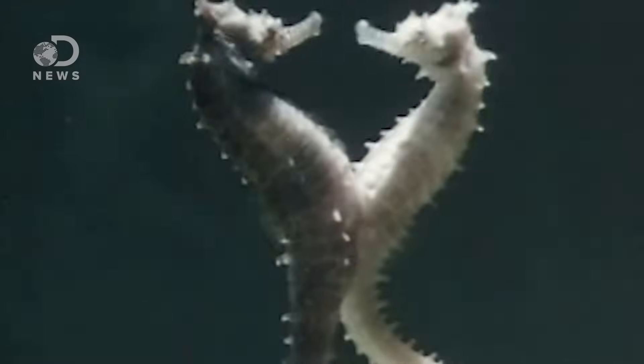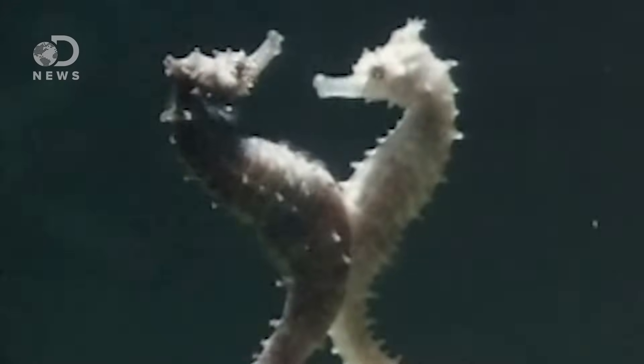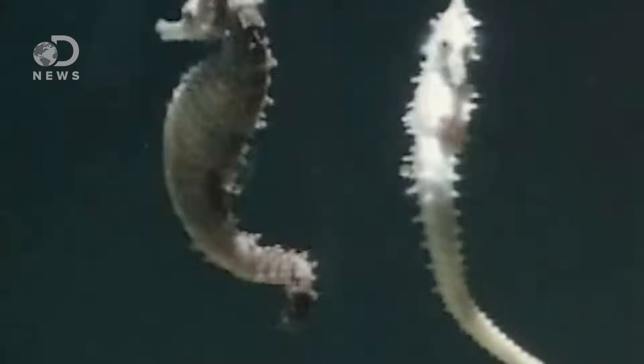When male and female seahorses mate, the female deposits her eggs into the male's pouch where they gestate for roughly one to six weeks. But for the male, gives birth to a bunch of tiny sea ponies. Just kidding, they're still called seahorses, and the baby ones are called fry. And also, ponies aren't baby horses anyway; a pony is just a type of horse. The more you know.